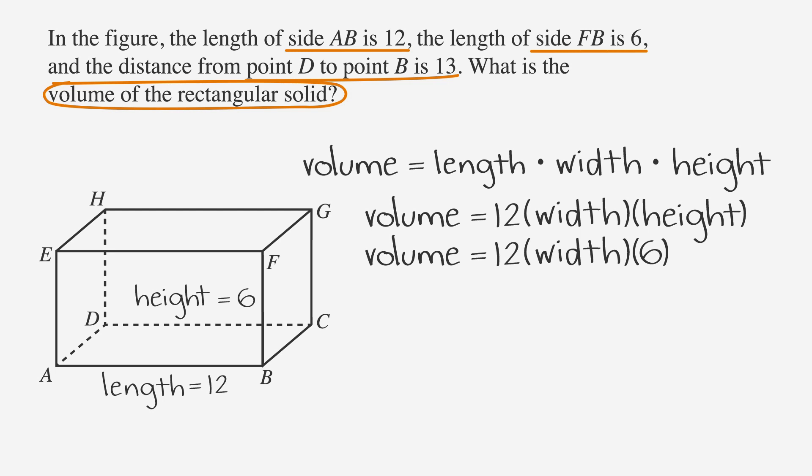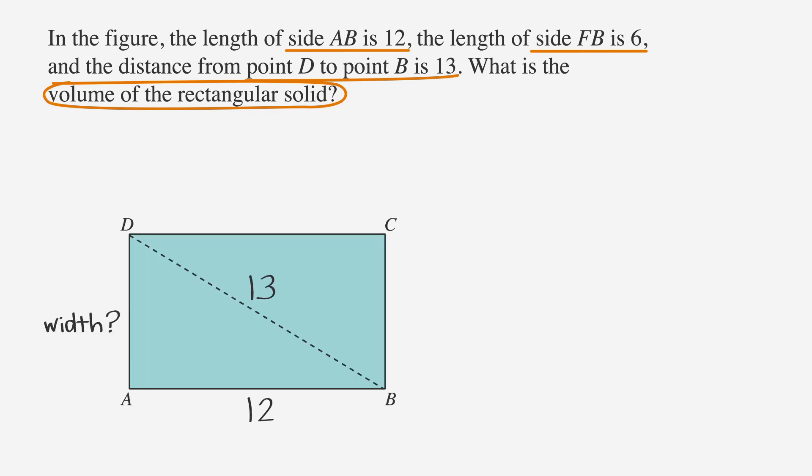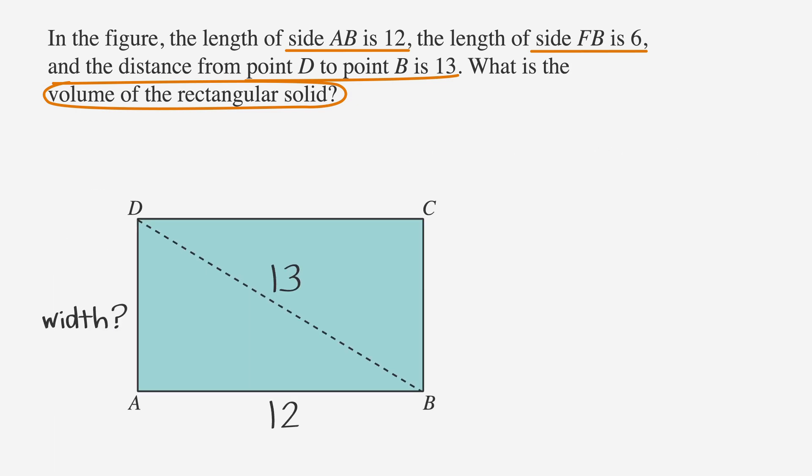Finally, we know the length from point D to point B is 13, which isn't a side, but we can label it by drawing a dotted line. Now we're just missing the width. If we take a look at just the base of the rectangular prism, we can see that it's just a rectangle. We know that the diagonal of the rectangle DB is 13, and that the length is 12.